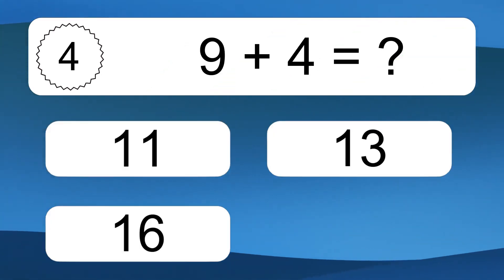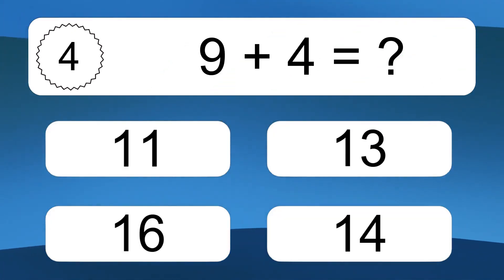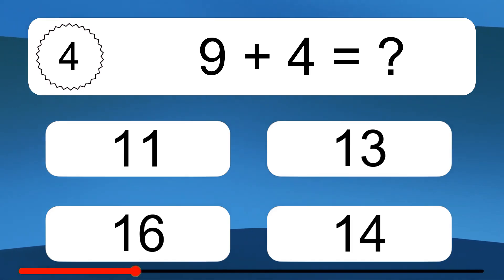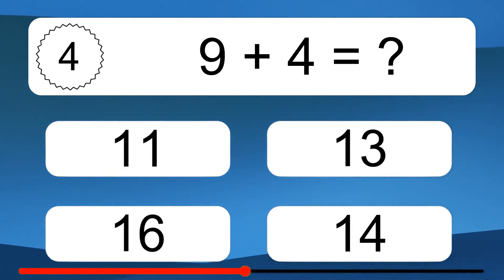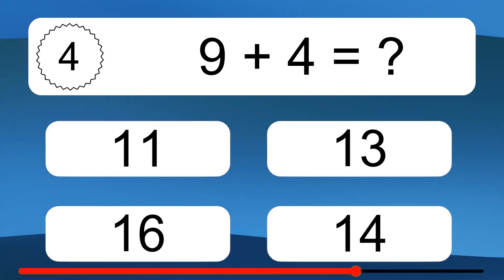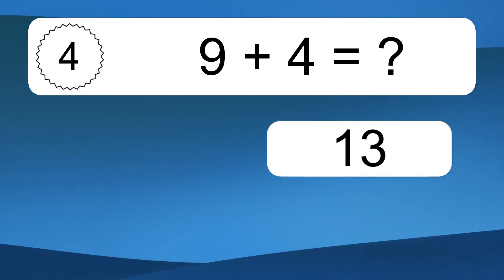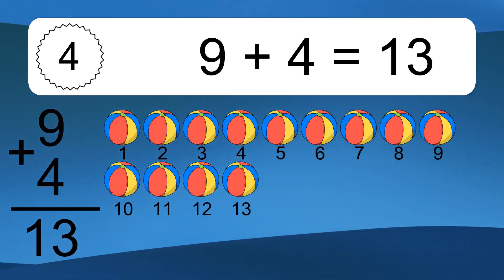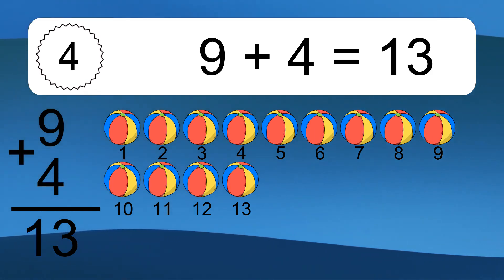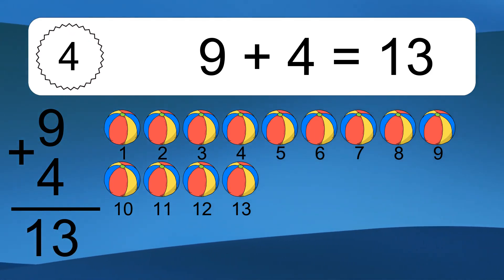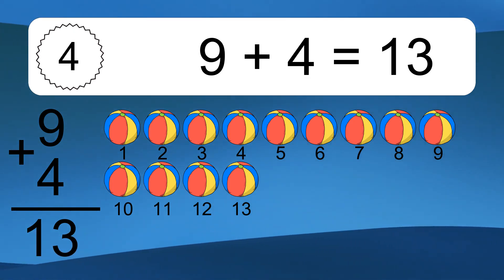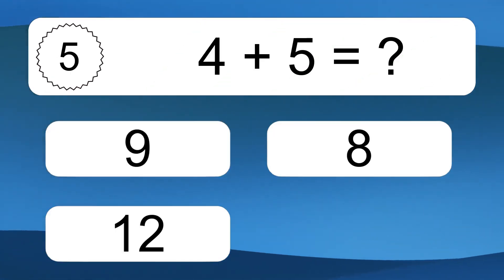9 plus 4 equals what? 9 plus 4 equals 13. Let's count it. 1, 2, 3, 4, 5, 6, 7, 8, 9, 10, 11, 12, 13. 4 plus 5 equals what?